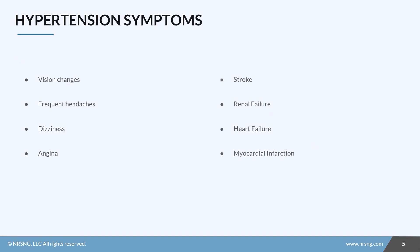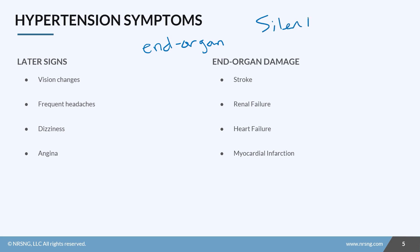When it comes to symptoms, the reality of hypertension is that sometimes there are no symptoms until it starts causing end organ damage. That's why it's sometimes called the silent killer. Someone may not check their blood pressure regularly and have no idea they have hypertension until they have significant problems. Later signs include vision changes due to pressure within the vessels in the eyes, frequent headaches and dizziness from pressure in the brain, and chest pain or angina from stress on the heart.